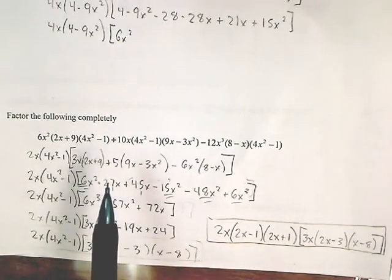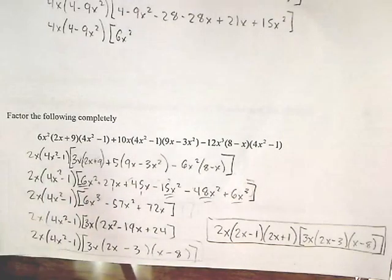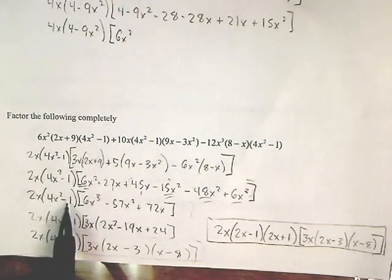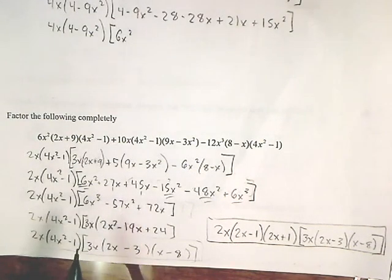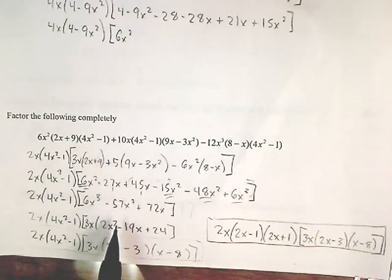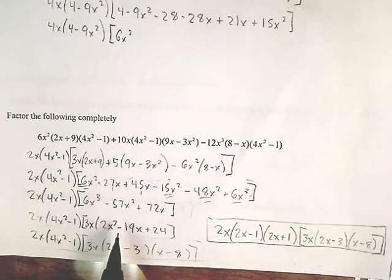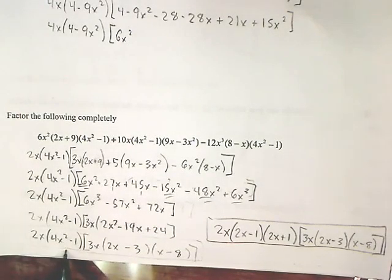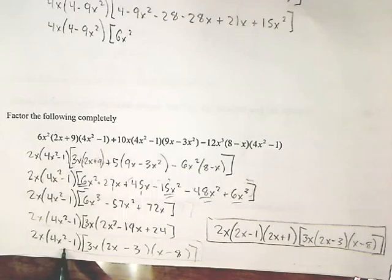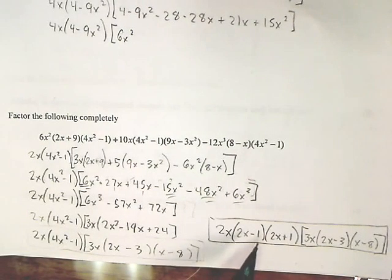And then you add like terms, getting that. And yep, that will factor to that. Then it factors into that, and then to end it, you factor out 4x squared minus 1, giving you that as your final.